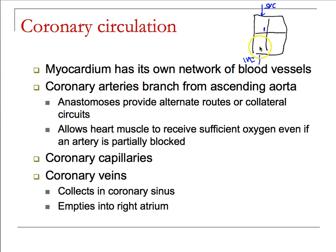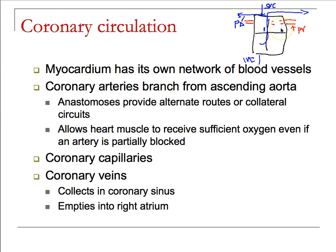Blood exits out of the right ventricle to travel to the lungs via the pulmonary trunk, which ultimately becomes the pulmonary arteries (PA). Blood then returns — and notice I'm drawing a specific number here — we actually have four pulmonary veins (PV) returning oxygenated blood to the left atria.